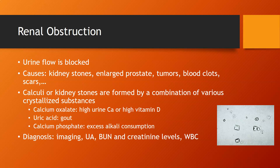Renal obstruction occurs when urine flow is blocked. Causes include kidney stones, enlarged prostate, tumors, blood clots, or scars. Kidney stones (calculi) are formed by crystallized substances: calcium oxalate stones result from high urine calcium or high vitamin D and form envelope-shaped crystals; uric acid crystals result from high uric acid due to gout; and calcium phosphate crystals are usually due to excess alkali consumption, such as taking too many antacids.